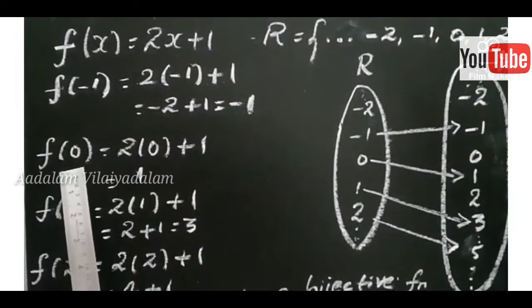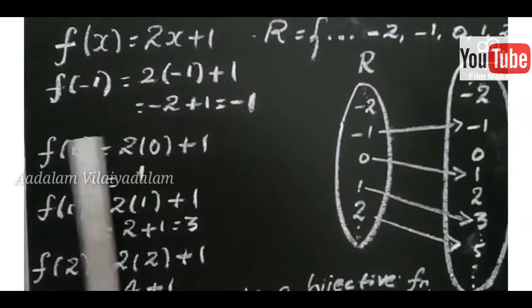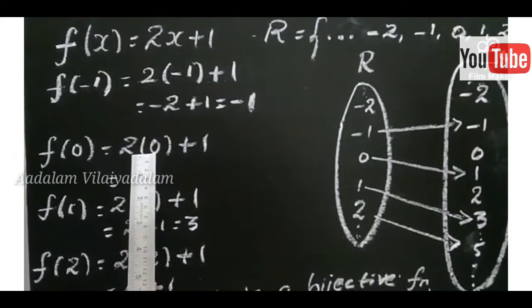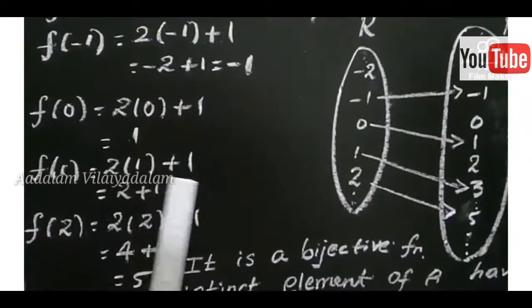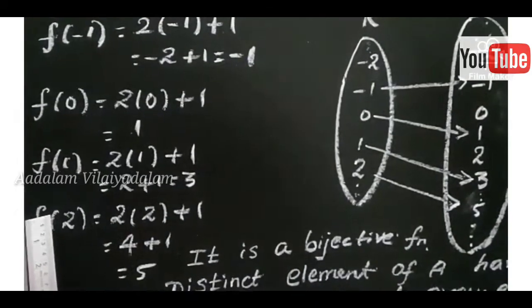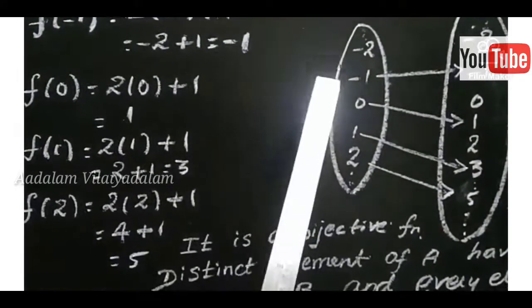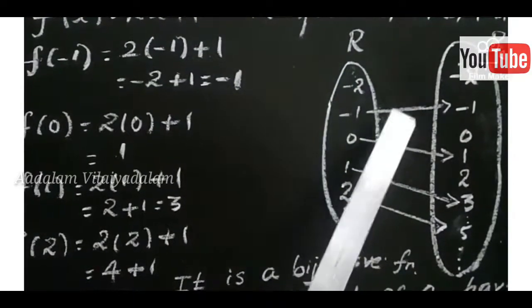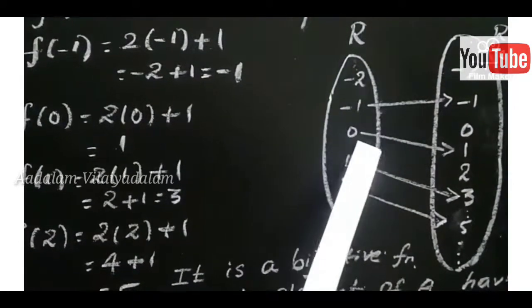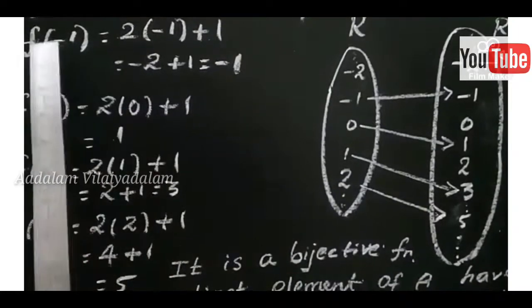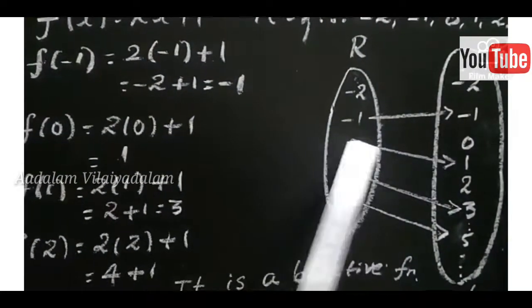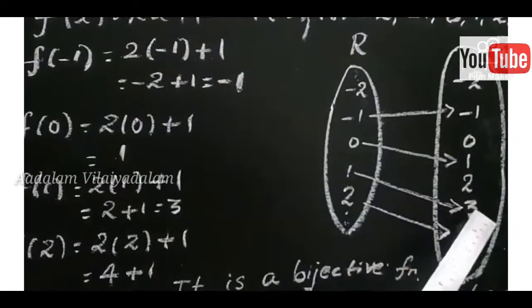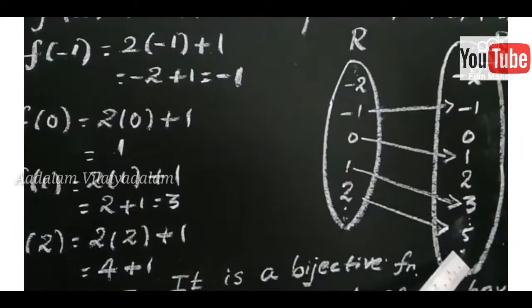Next we substitute X=0: F of 0 equals 2 into 0 plus 1, so 0 plus 1 equals 1. Next, F of 1 equals 3. F of 2 equals 5. Now we draw the arrow diagram with real numbers: minus 2, minus 1, 0, 1, 2, 3 and so on. Minus 1 maps to minus 1, 0 maps to 1, 1 maps to 3, 2 maps to 5.